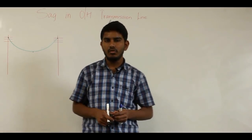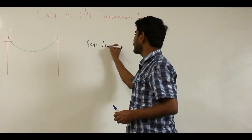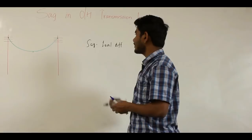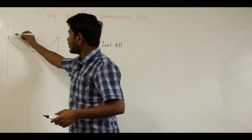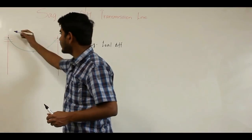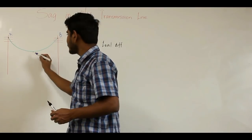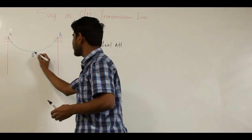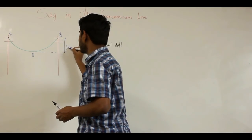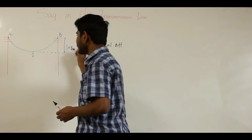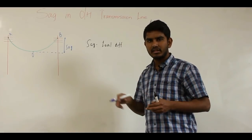Sag is defined as the level difference between the support point and the lowest point on the conductor. If we have two transmission towers with support points A and B, and the lowest point on the conductor is O, then the level difference between the support point and the lowest point O is defined as the sag. During the erection of towers, transmission conductors are suspended between the two transmission towers.